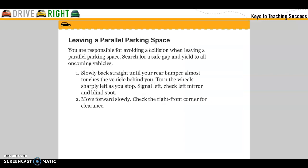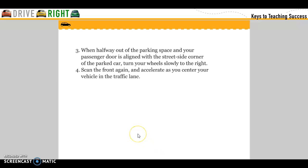Leaving a parallel parking spot. You are responsible for avoiding a collision when leaving a parallel parking spot. Search for a safe gap and yield to all oncoming traffic. Slowly back straight until your rear bumper almost touches the vehicle behind you, then turn the wheels sharply to the left as you stop. Signal left, check the left mirror and blind spot, and move forward. Check the right front corner for clearance. When halfway out of the parking spot and your passenger door is lined with the street-side corner of the car, turn your wheels slowly to the right. Scan the front again and accelerate as you center your vehicle in the lane.